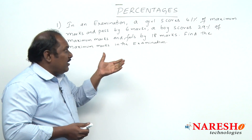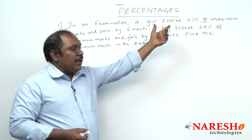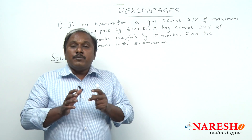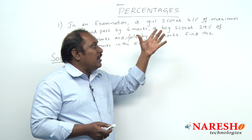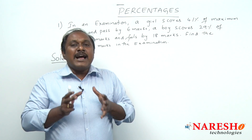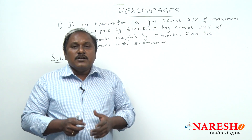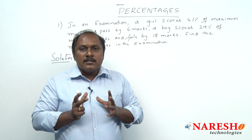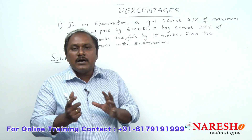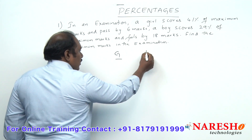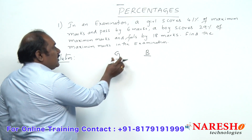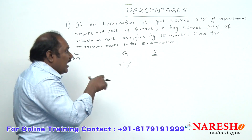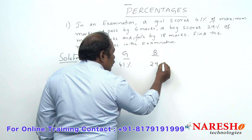In this method, once again let us look into the question. Girl scored 41% of maximum marks, boy scored 29% of maximum marks. What do you mean by 41% of maximum marks? It means that if maximum marks are 100, girl scores 41. Generally we assume the maximum marks as 100%. Let us try to compare the percentages of girl and boy and the marks of girl and boy. The percentage scored by girl is 41% and the percentage scored by boy is 29%.